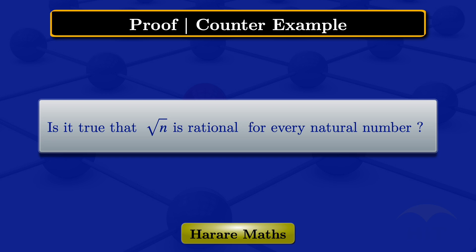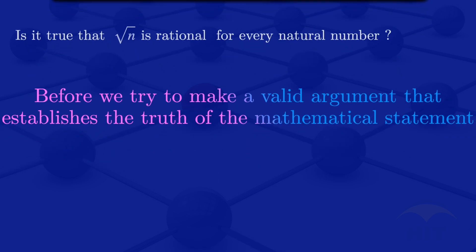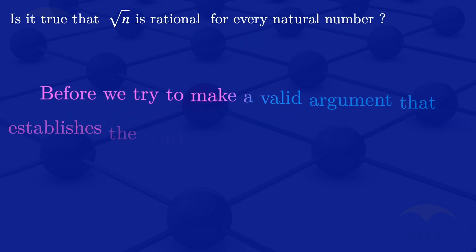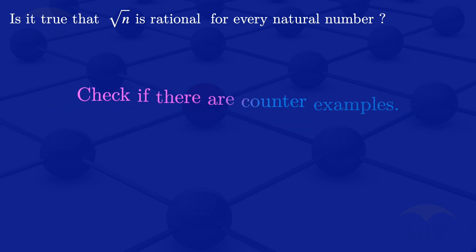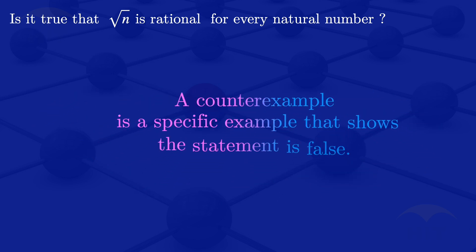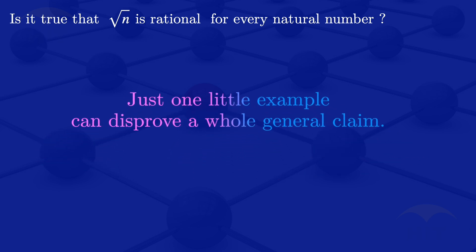In this video, I am going to check if it is true that the square root of n is rational for every natural number. Before we try to make a valid argument that establishes the truth of the mathematical statement, check if there are counterexamples. A counterexample is a specific example that shows the statement is false. Just one little example can disprove a whole general claim.